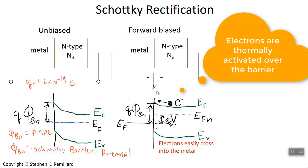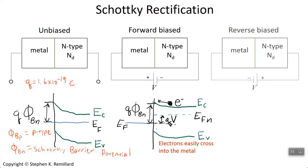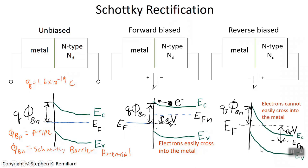If you turn the battery around and place the positive terminal on the n-type semiconductor, the junction becomes reverse biased. Now you are decreasing the energy levels inside the semiconductor, since electrons like to be near positive voltage, so the energy is lower and the bands bend down instead of up. Just like in the forward bias case, the bands bend by the amount of applied voltage. With the conduction band still required to meet the interface at q·φ_bn, the hill becomes much steeper than in the forward bias case.